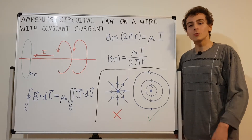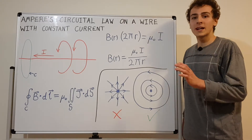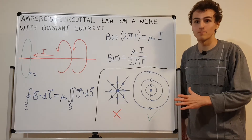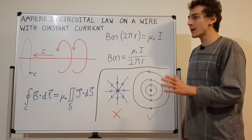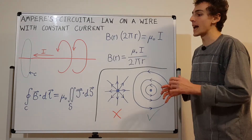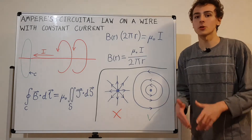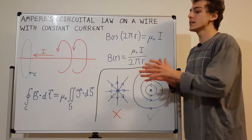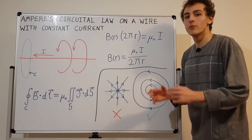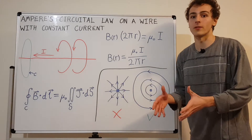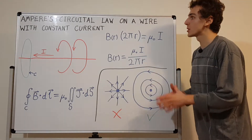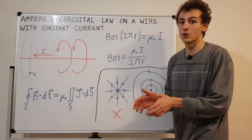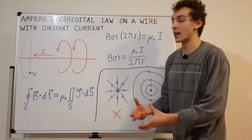In this video, I'm going to apply one of Maxwell's equations to an interesting system. The equation I'm going to choose is Ampere's Circuital Law — but it's actually one of the previous versions before Maxwell modified it. It's Ampere's Circuital Law without the displacement current term that Maxwell added in.